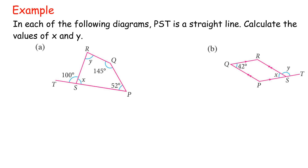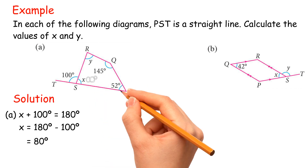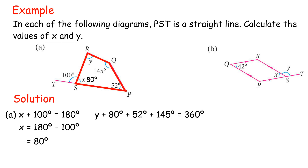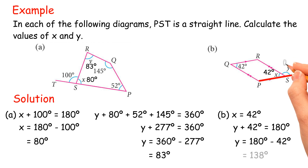Example: In each of the following diagrams, PSD is a straight line. Calculate the values of X and Y. Solution A: X + 100° = 180°, so X = 80°. Y + 80° + 52° + 145° = 360°, so Y = 360° − 277° = 83°. Solution B: Y = 180° − 42° = 138°.